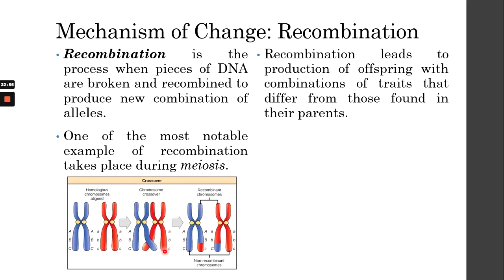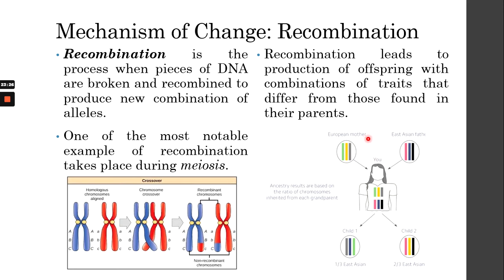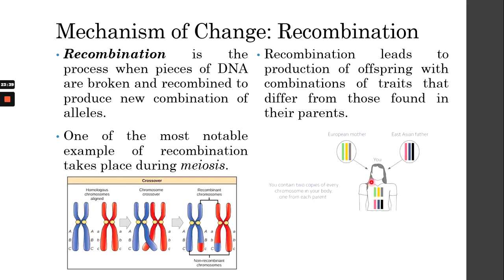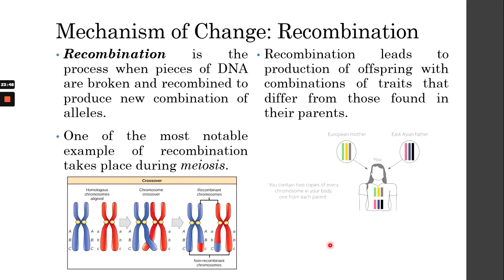Recombination is very important because it creates offspring that are different from their parents — not just a carbon copy, but a unique combination of both parents. Even maternal twins, who come from the same cell that divided, are still two very distinct individuals because of recombination.